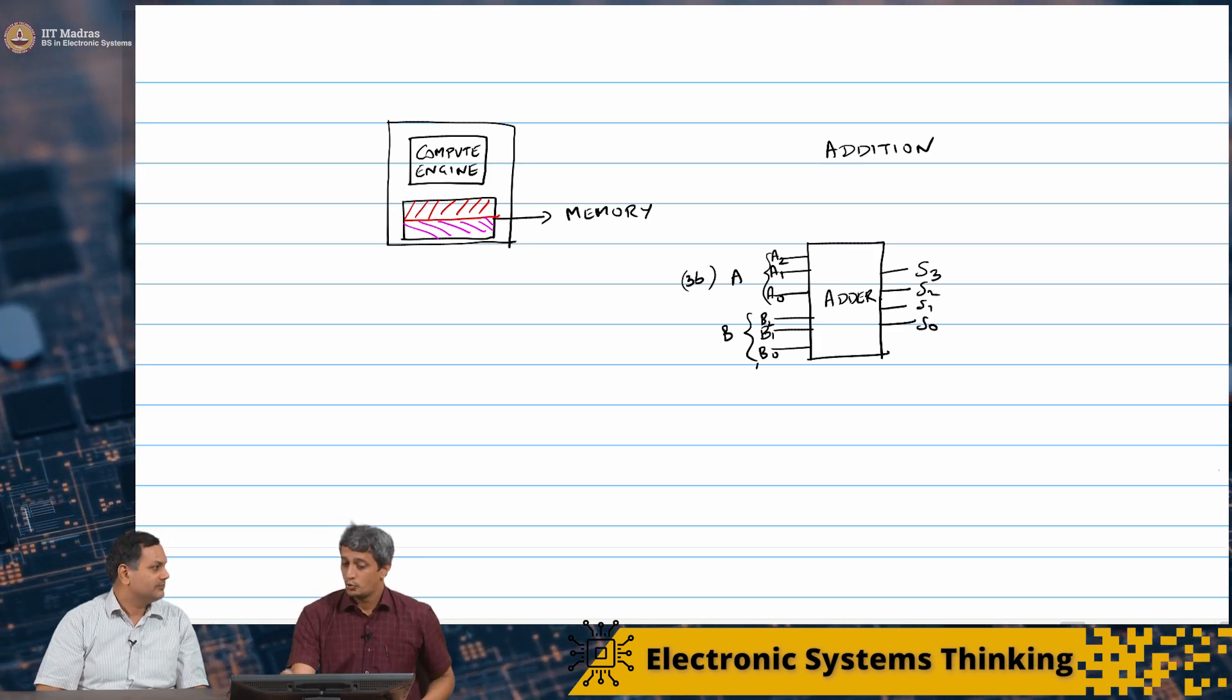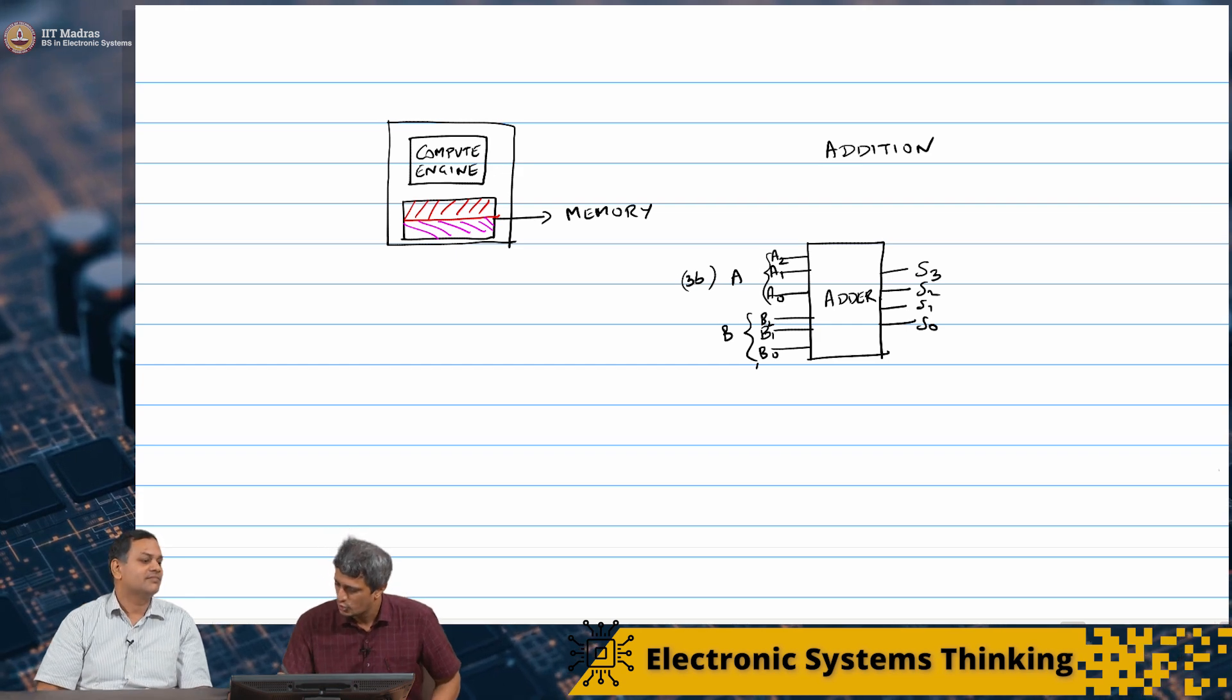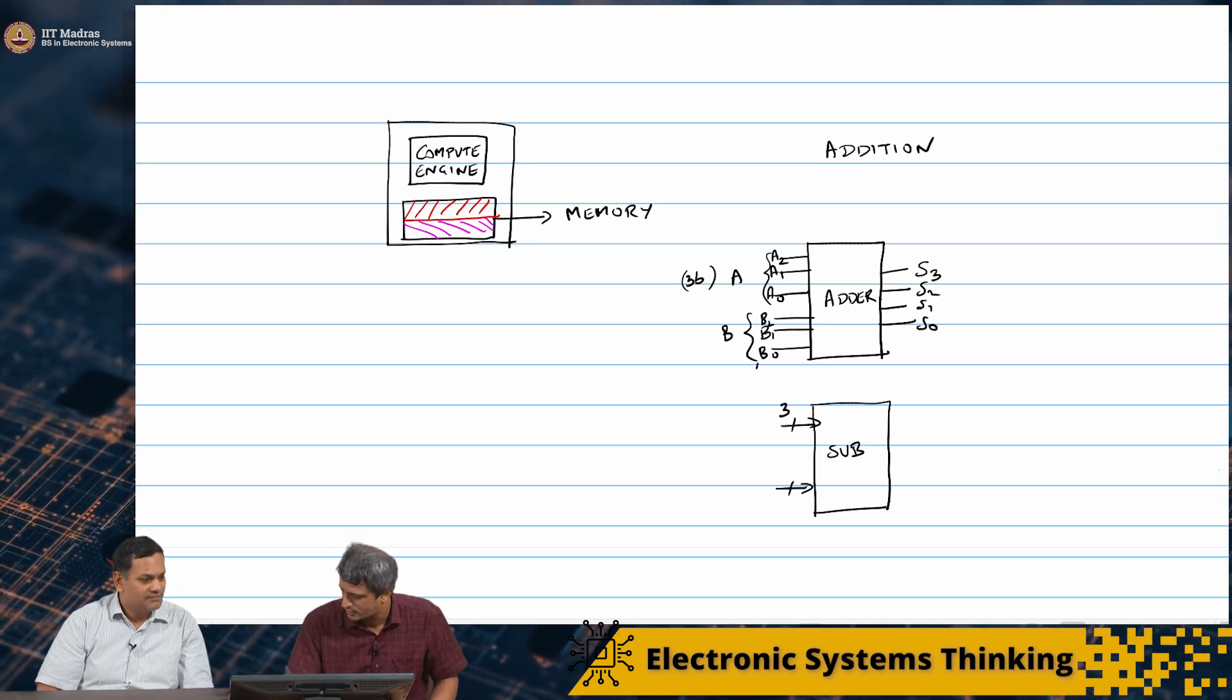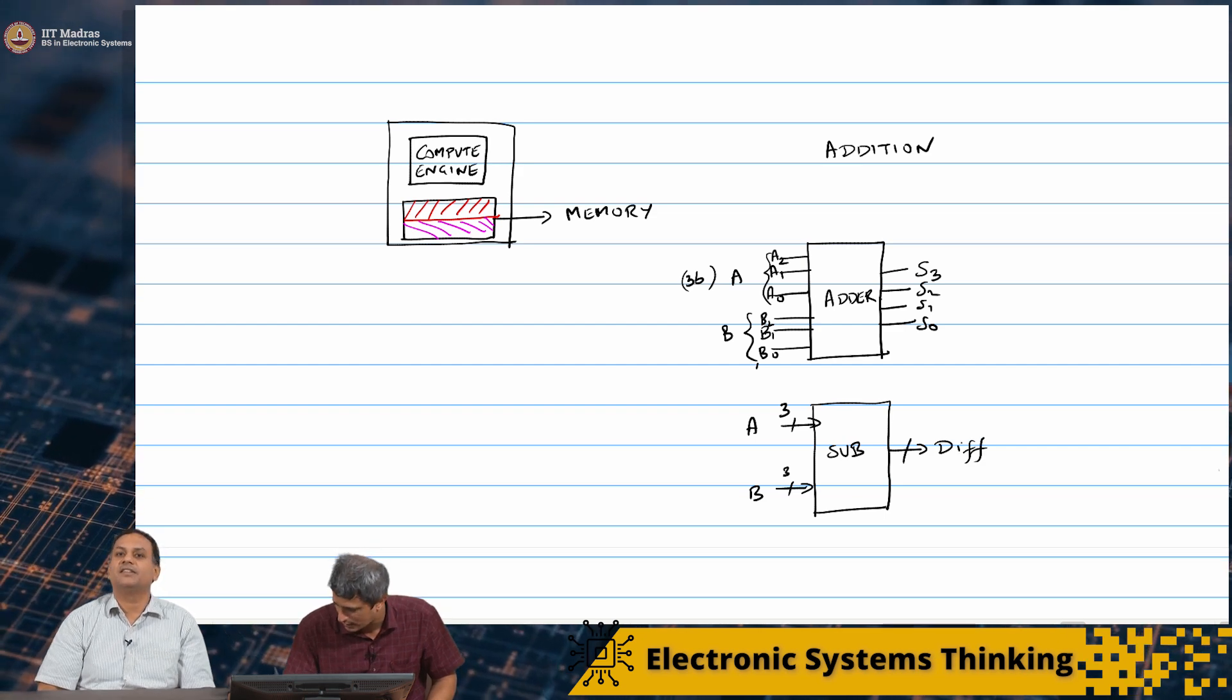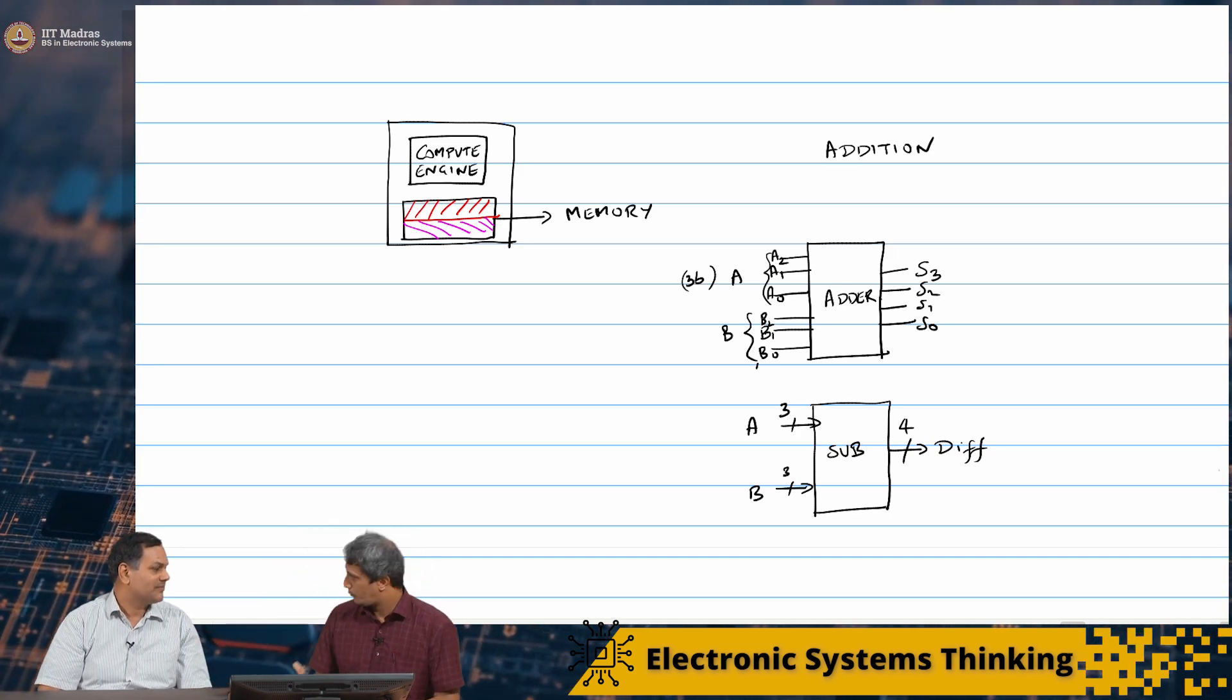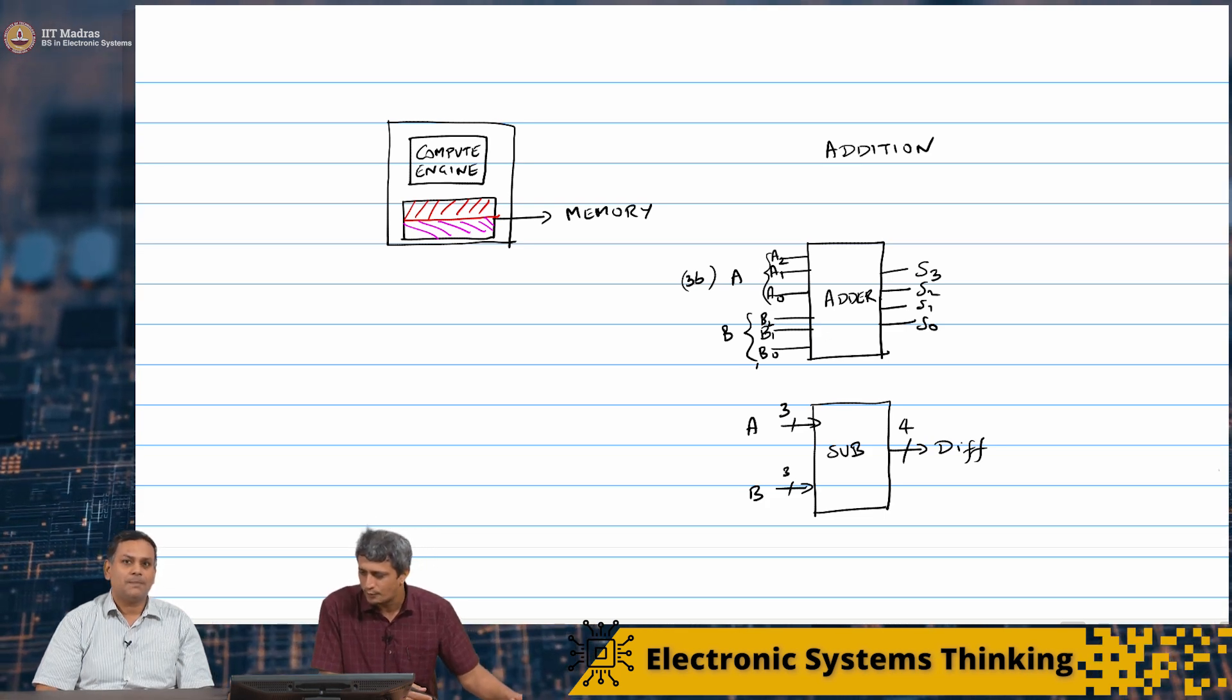Now, suppose we wanted to do subtraction, what would we have done in the analog domain? We would have just reversed the voltage V1 or V2. Now, in the digital domain if you wanted to implement a subtraction, you basically need to have a different block that implements subtraction. Same A, B, now you will get the difference. If you wanted to do multiplication, you have another block. So, a typical digital computer effectively has all of these blocks.